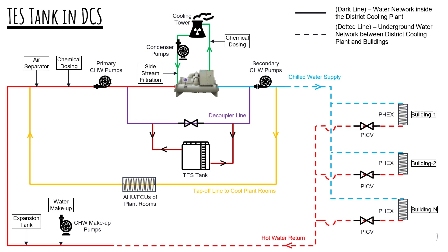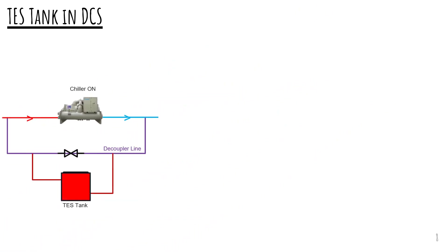The diagram shown represents the general process of a district cooling system. Detailed presentation is available in the video link provided in the video description. Now let us discuss the use of the decoupler line and thermal energy storage tank.